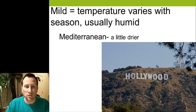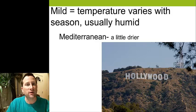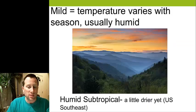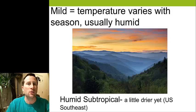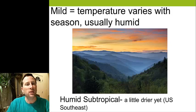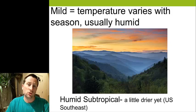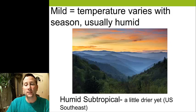Mediterranean climates get precipitation and it's warm almost year-round, but there's some seasonal variation in temperature. The third mild climate would be humid subtropical — a little drier yet. The example in the United States would be the southeastern United States: Florida, or at least the northern portion of Florida, Georgia, South Carolina, North Carolina, into Virginia. That would be humid subtropical — still with seasons.